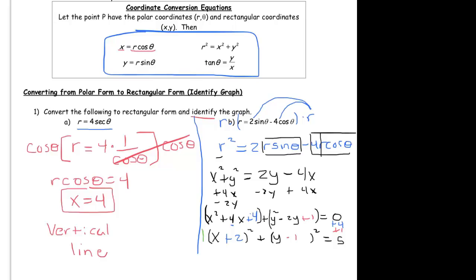And here is my final representation. So that is a circle. That's a circle, you can see, with a center. The center is equal to negative 2, positive 1. And the radius is equal to the square root of 5, because that's r squared here. This is r squared.